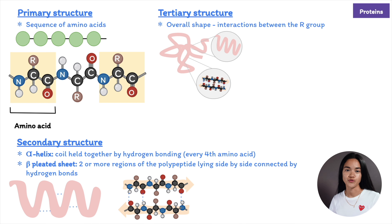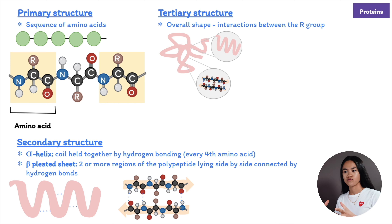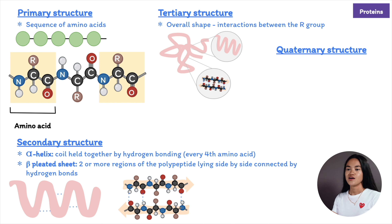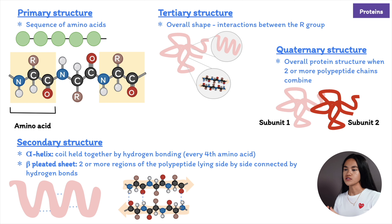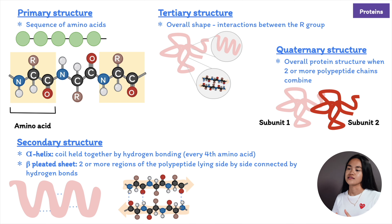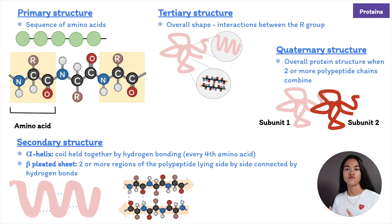Some proteins have two or more polypeptide chains that come together to form one functional molecule — this is the quaternary structure. An example is collagen, a fibrous protein with three identical helical polypeptides forming a large triple helix, which accounts for 40% of the protein in our body.